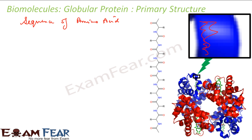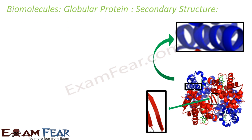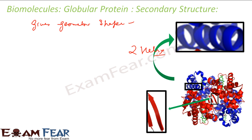Once you have the sequence, you see that the chain is curled — that comes as part of secondary structure. Secondary structure gives a specific geometric shape, caused by intermolecular and intramolecular bonding. There are two kinds of secondary structure shapes: alpha helix, which looks like a screw, and beta-pleated sheet, which are the straight ones. So secondary structure is either alpha helix or beta-pleated.